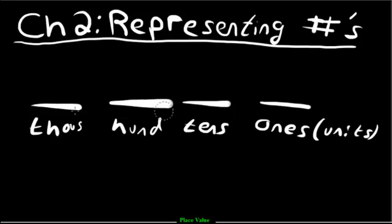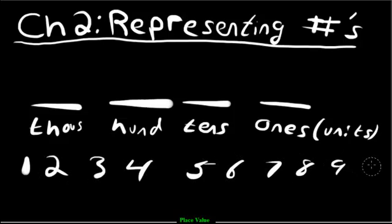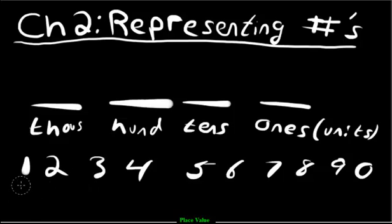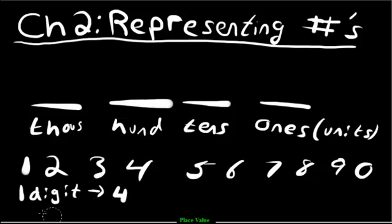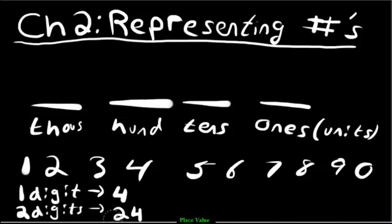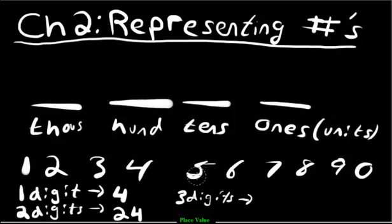These are the spots that we can write our digits in. Recall that the only digits in our number system are 1, 2, 3, 4, 5, 6, 7, 8, 9, and 0. Using these digits we can create all possible numbers that exist - we're not limited, we can go forever. Some numbers are made up of only one digit, like the number four. Some numbers are made up of two digits, like twenty-four. Other numbers are made up of three, four, five digits - there's no limit.